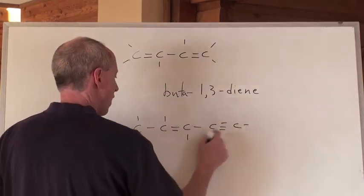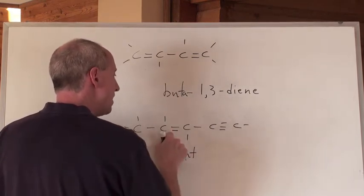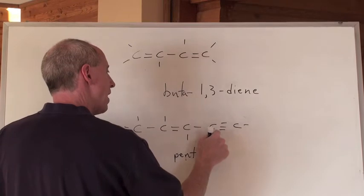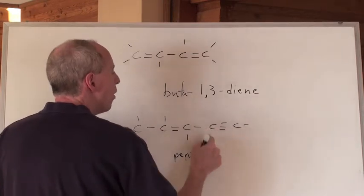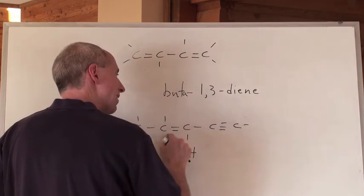One, two, three, four, five. So, it's a pent. So, pent what? Well, there's an een at the two, and an een at the four. Or, there's an een at the one, and an een at the three.